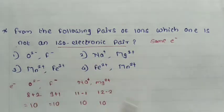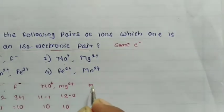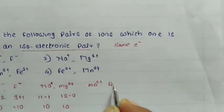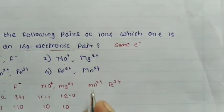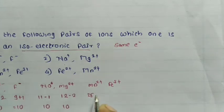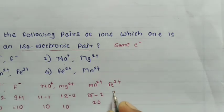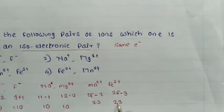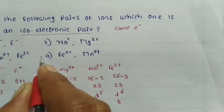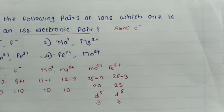See pair 3: Mn²⁺ and Fe³⁺. Atomic number of manganese is 25; Mn²⁺ has 25 − 2 = 23 electrons. Atomic number of iron is 26; Fe³⁺ has 26 − 3 = 23 electrons. Both have 23 electrons — this remaining pair is an isoelectronic pair, not the answer.